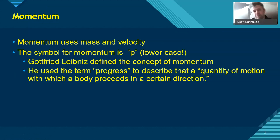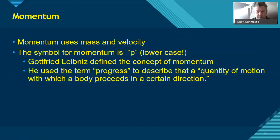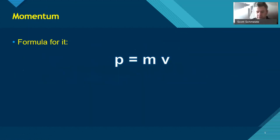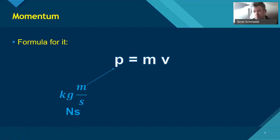First and foremost, some intro stuff about what's going on with collisions. First, we need to talk about momentum — something we talked about in the past. It's that feeling when you stop late for a stop sign in a car. The symbol for momentum is P, which stood for progress by Gottfried Leibniz. Our formula is P equals MV. P is measured in kilogram meter per second or a Newton second — I'm going to lean toward kilogram meter per second. This week we're going to cover four types of collision interactions.